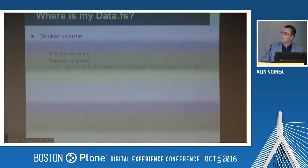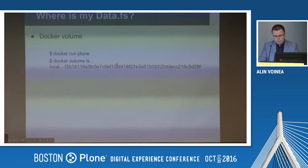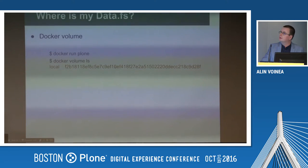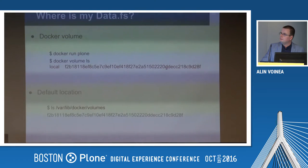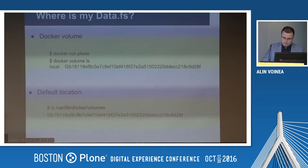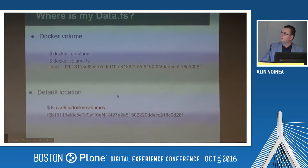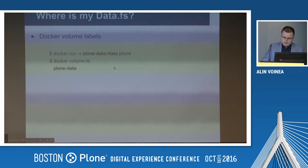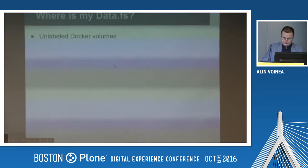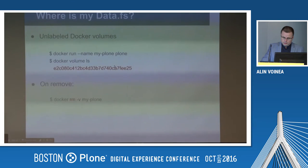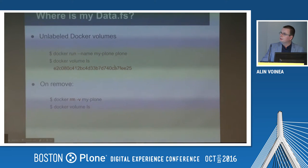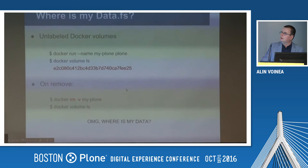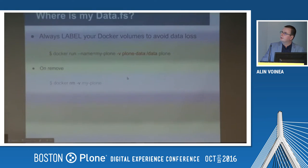The storage question: where is my Data.fs? By default, this image uses Docker volumes. When you run Docker, it will create a cryptic name for your volume, and the default location of Docker volumes is in `/var/lib/docker/volumes`. You should use Docker volume labels, because if you don't, when you remove your container, you will also remove the volume and may lose data in the process.